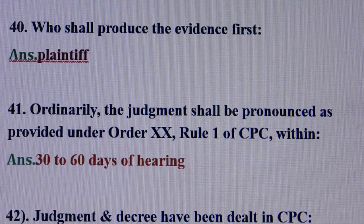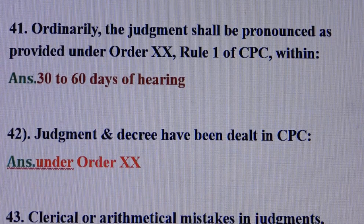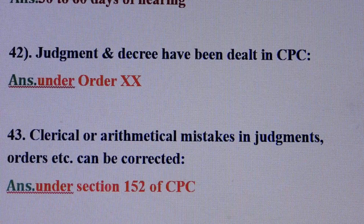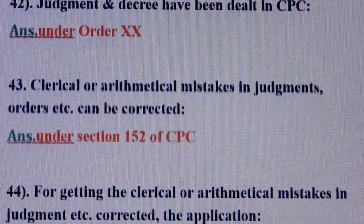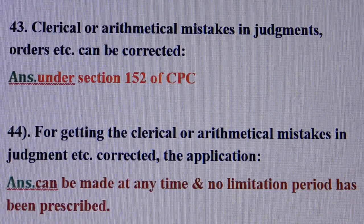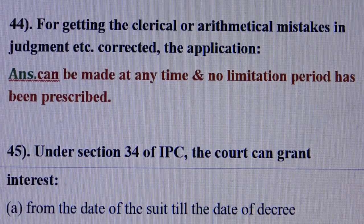Question number 40: Who shall produce the evidence first? Answer is: plaintiff. Question number 41: Ordinarily, the judgment shall be pronounced as provided under Order 20 Rule 1 of CPC within — answer is: 30 to 60 days of hearing. Question number 42: Judgment and decree have been dealt in CPC — answer is: under Order 20. Question number 43: Clerical or arithmetic mistakes in judgment, order, etc. can be corrected — answer is: under section 152 of CPC. Question number 44: For getting clerical or arithmetic mistakes in the judgment corrected, the application can be made at any time and no limitation period has been prescribed.